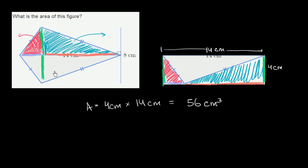So if you're taking the area of a kite, you're really just taking one-half the width times the height.